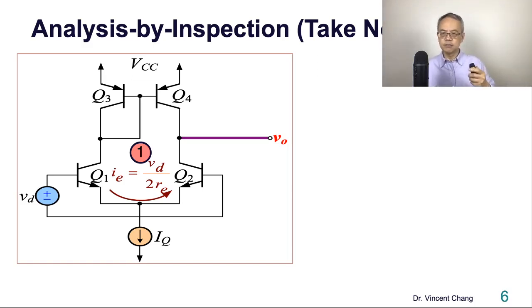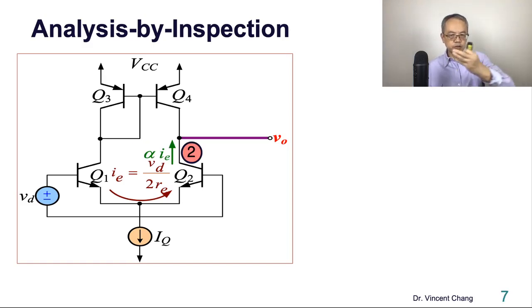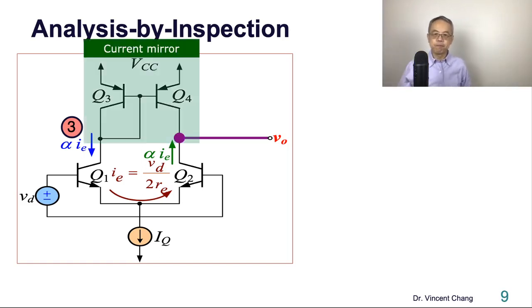Then the green current goes up from emitter to collector multiplied by alpha, so alpha IE. Next, step 3, going counter clockwise from emitter to collector times alpha. Then you see the current mirror. The number 3 current touches the current mirror, so it's the mirror, the current reproduction.